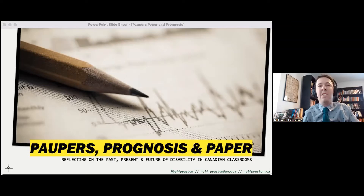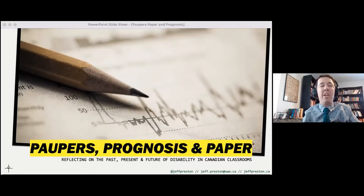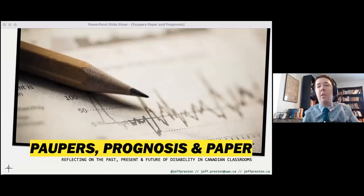On our first slide, we have a macro photo of a pencil sitting atop a line graph with undulated lines spiking from negative numbers to over 100. The title of this talk, highlighted in yellow, is "Popper's Prognosis and Paper," with the subtitle reflecting on past, present and future of disability in Canadian classrooms. You can find me on most social media sites as @JeffPreston, email me at jeff@preston.ca, or find my web blog at jeffpreston.ca.